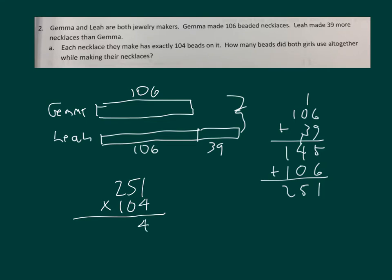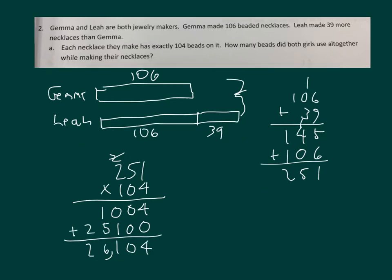Let's work it out. 4 times 2 is 8 plus 2 is 10. Place a 0, place two 0's. And then 1 times 1 is 1, 1 times 5 is 5, 1 times 2 is 2. And then I will add those together. So the answer is 26,104 beads all together.